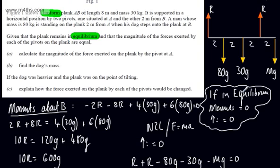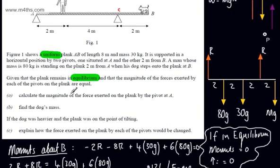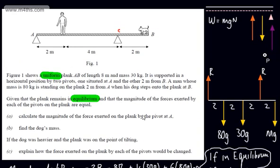So that's your take-home point: if in equilibrium, moments equal 0 about any point, and resolving in any direction gives a resultant of 0. Now for part C: if the dog was heavier and the plank was on the point of tilting, explain how the forces exerted on the plank by each of the pivots would change.